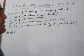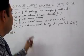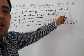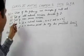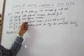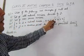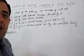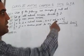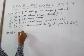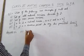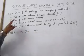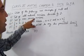Exercise 1.2, question number 1: which of the following are examples of null set? The first one is the set of odd natural numbers divisible by 2. As we know, there is no odd natural number which is divisible by 2, therefore it is an example of null set. Now the second one: set of even prime numbers.